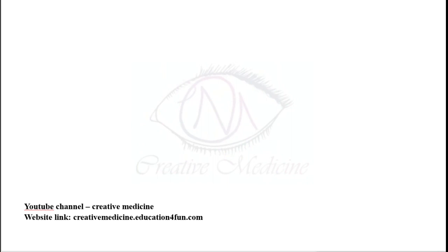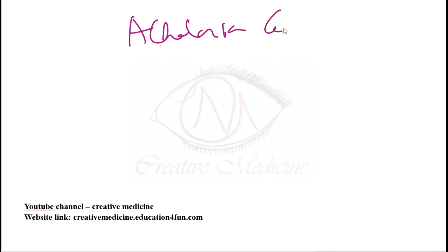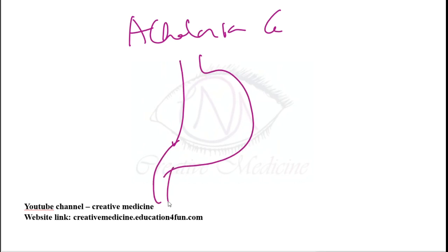Achalasia cardia is characterized by absence of lower esophageal sphincter relaxation. The main pathogenesis involves two types of neurons in the Auerbach's plexus — stimulatory neurons responsible for contraction, and inhibitory neurons responsible for relaxation.